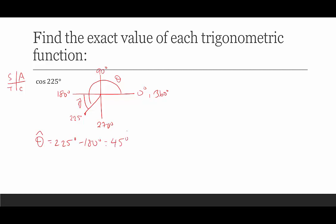Cosine of the reference angle — cosine of 45° — is √2/2. Cosine of 225° is either √2/2 or negative √2/2. Since cosine is negative in quadrant 3, cosine of 225° equals negative √2/2.